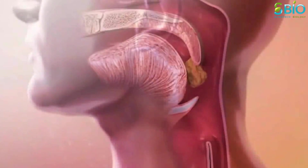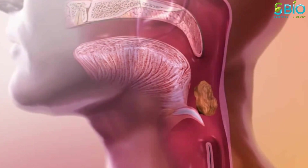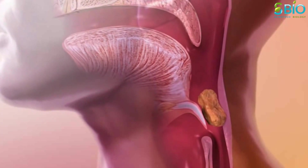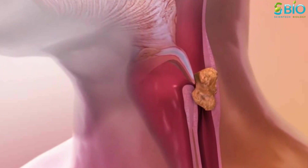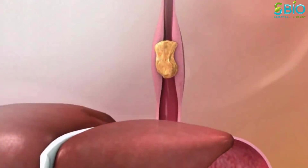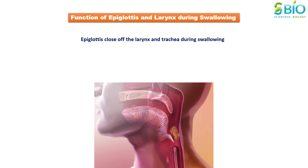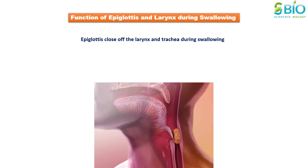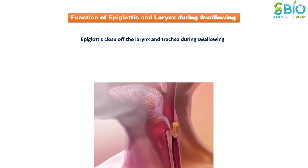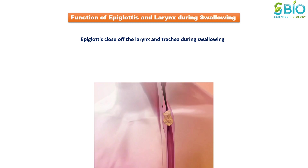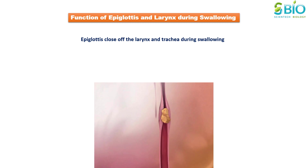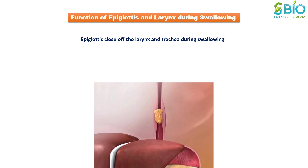The next steps are involuntary. The bolus passes through the pharynx, and the epiglottis closes off the trachea as peristaltic waves move the bolus into the stomach. During swallowing, the epiglottis prevents choking by folding down to close the larynx and trachea, preventing the bolus from passing into the lower airways instead of the esophagus.